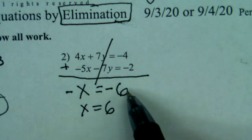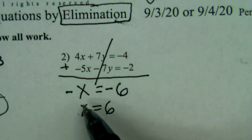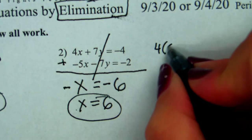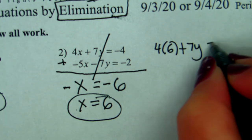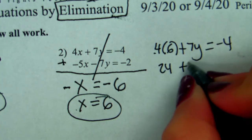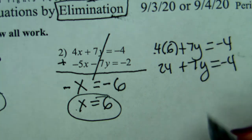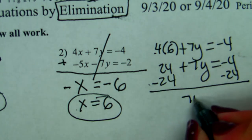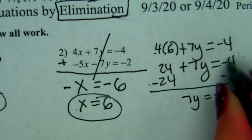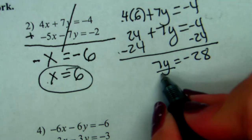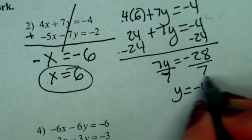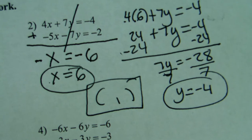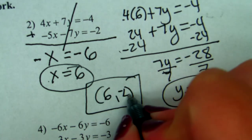If the opposite of x is negative 6, then x is 6 — multiply both sides by negative 1. Then pick an equation to substitute in 6 for x. 4 times 6 is 24 plus 7y equals negative 4. Subtract 24 from both sides: 7y equals negative 28. Divide by 7, y equals negative 4. So the answer as an ordered pair is 6, negative 4 — x comma y.